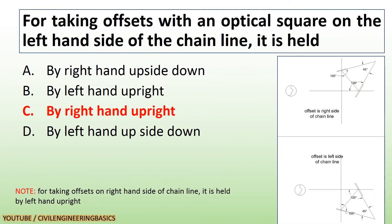For taking offsets with an optical square on the left-hand side of the chain line, it is held by the right hand upright. For taking offsets on the right-hand side of the chain line, it is held by the left hand upright.